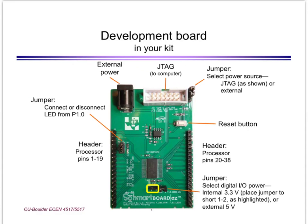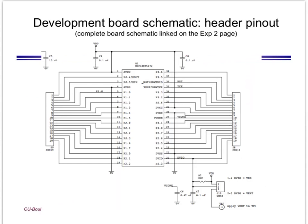Finally, there is a jumper that selects whether the supply for the microcontroller itself is 3.3V or an external 5V supply — we will always use 3.3V. Just to mention, that external power input can be between 5V and about 15V. Here, just for reference, is a portion of the schematic of the development board; the complete schematic is linked on the Experiment 2 page.